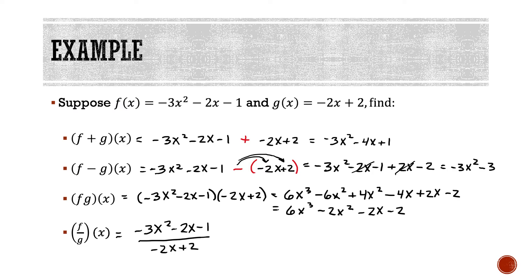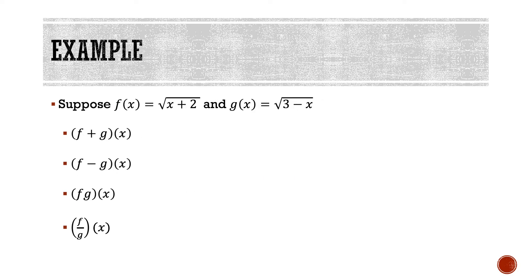Let's look at our last problem. We have f + g of x, where f(x) = √(x + 2) and g(x) = √(3 - x). When we add the two functions together, we write down function f, put a plus sign in between, and write down function g. There is no way to add these two square roots together because they do not have similar terms underneath the radical, so we're pretty much done at that point.